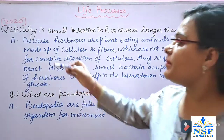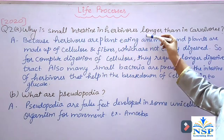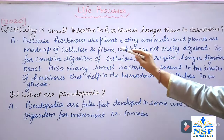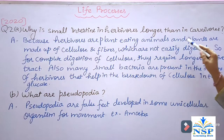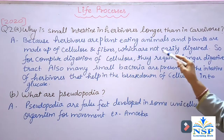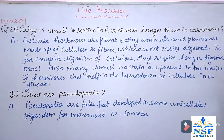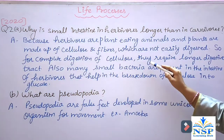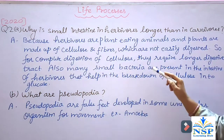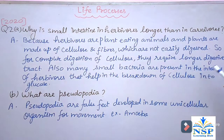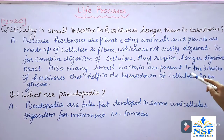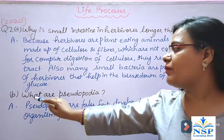Question number 2: Why is the small intestine in herbivores longer than in carnivores? Because herbivores are plant-eating animals and plants are made up of cellulose and fibers, which are not easily digested. For complete digestion of cellulose, they require a longer digestive tract. Also, many small bacteria are present in the intestine of herbivores that help in the breakdown of cellulose into glucose.